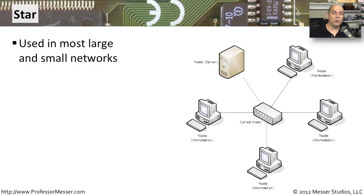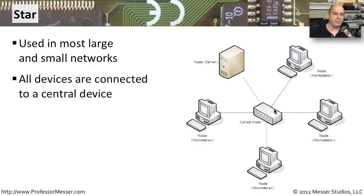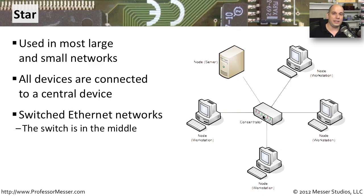The vast majority of local area networks use a star topology. Everyone on the network is connected to a single concentrator or switch in the middle. Everyone's connected into this same device, or a series of devices for redundancy. You can see it's a star because everybody is connected into that central device — nobody's really connected directly to one another. This is very common in switched ethernet, where everybody's connected to a large switch in the middle of the building or on the floor.